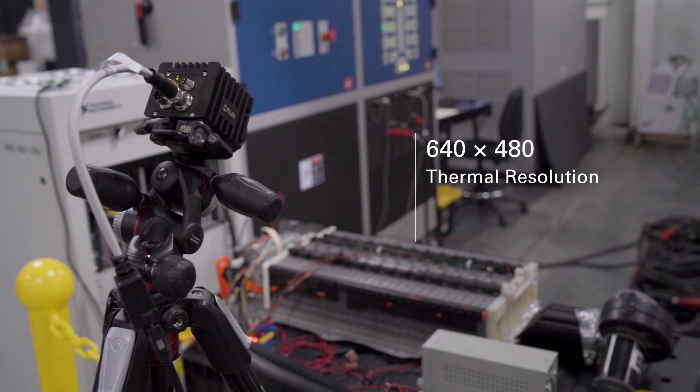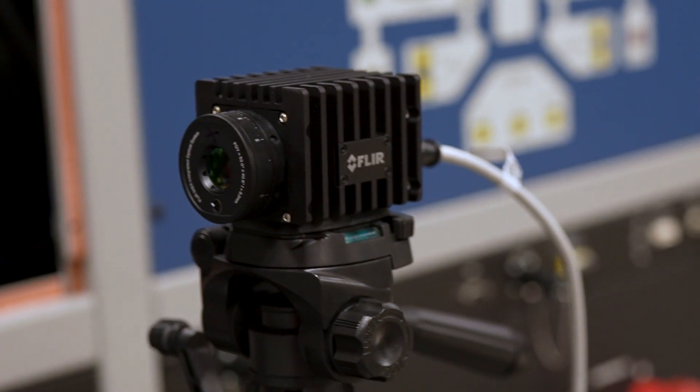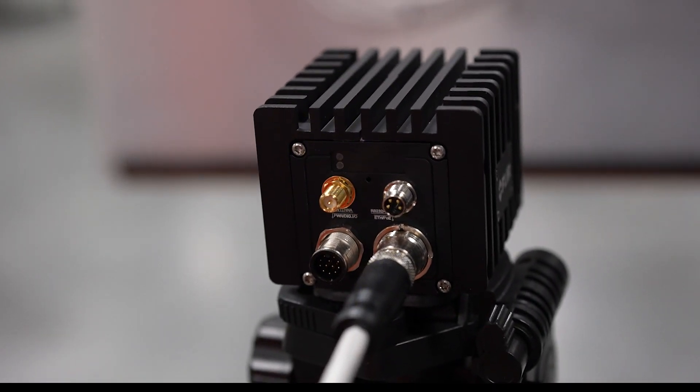With up to 640 by 480 thermal image resolution and plus or minus 2 degrees C accuracy, the A50-A70 packs the power of thousands of thermocouples into one portable unit.